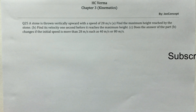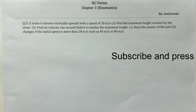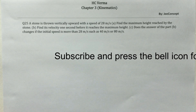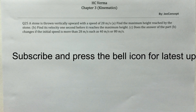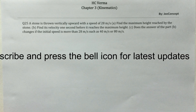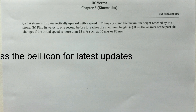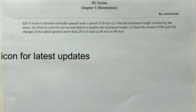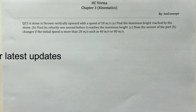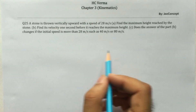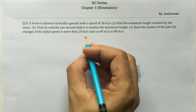This is a solution video for question number 25, chapter 3 of SC Verma. The problem states: a stone is thrown vertically upward with a speed of 28 meter per second. We have to find: A) the maximum height reached by the stone, B) its velocity one second before it reaches the maximum height, and C) does the answer of part B change if the initial speed is more than 28 m/s, such as 40 or 80 meter per second.